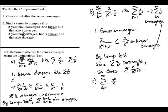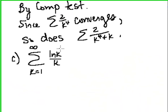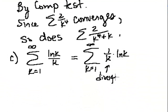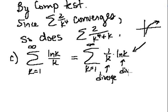Let's look at part c: the series k equals 1 to infinity of natural log of k over k. The first thing we want to do is analyze this to see if we think it converges or diverges. It helps to think of this as 1 over k times the natural log of k. We know that 1 over k by itself would diverge because it's the harmonic series. And we know that natural log of k behaves like natural log of x, which increases without bound as x increases, so natural log of k also diverges — its underlying sequence certainly doesn't approach zero. So I'm going to guess that this diverges.